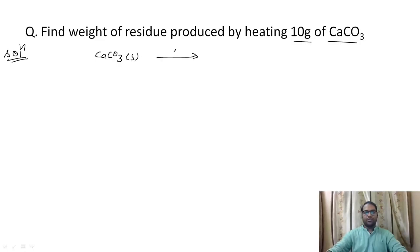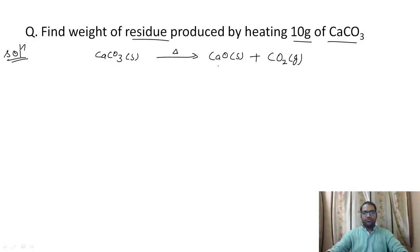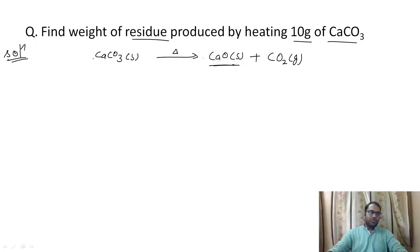The balanced chemical equation is: calcium carbonate solid produces calcium oxide solid on heating and CO₂ as gas. We have to find the residue, which is the solid part. Here we have solid calcium oxide, so we have to find the weight of calcium oxide. First of all we have to balance this equation — as we can see, this equation is already balanced.